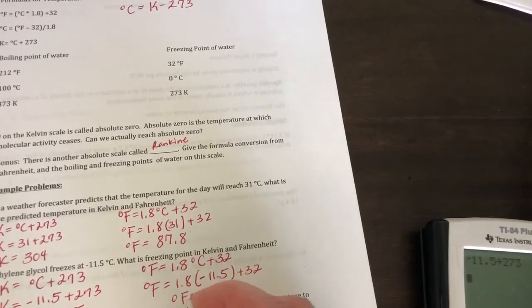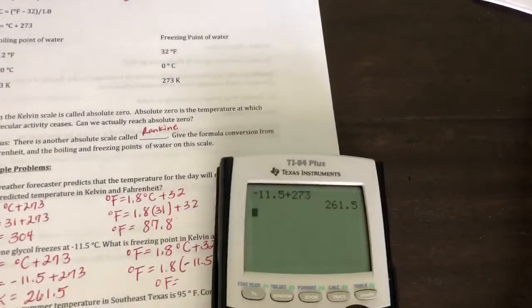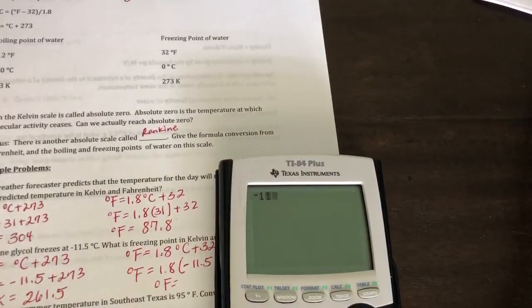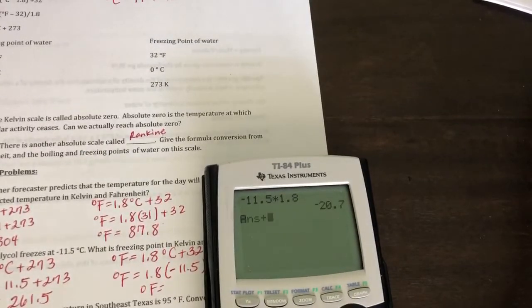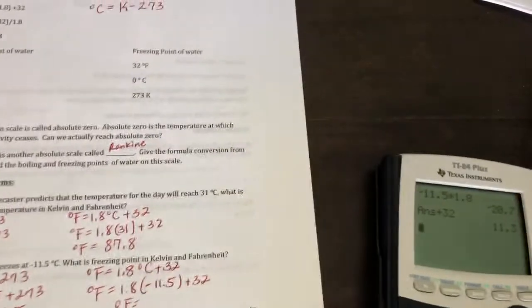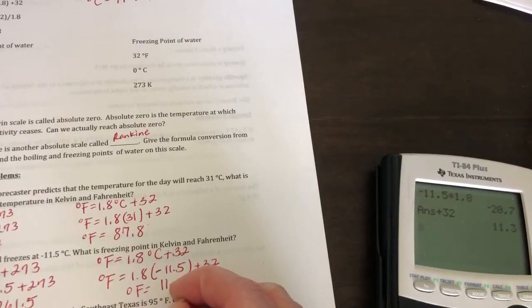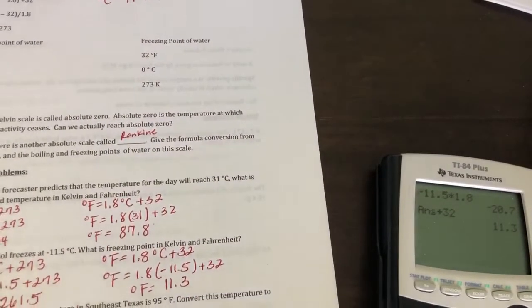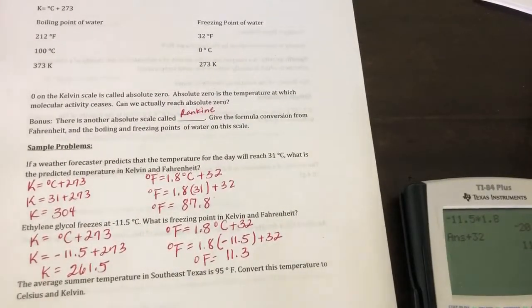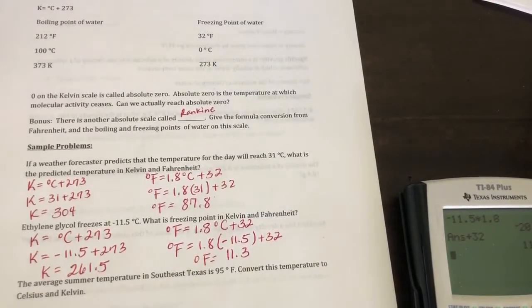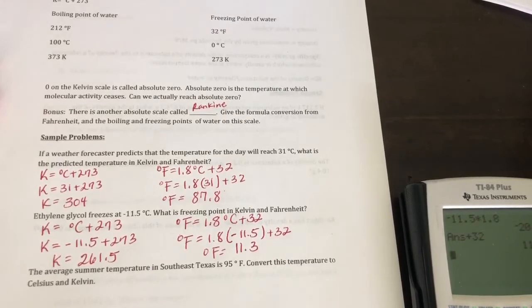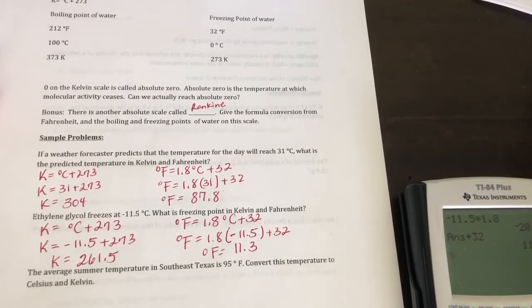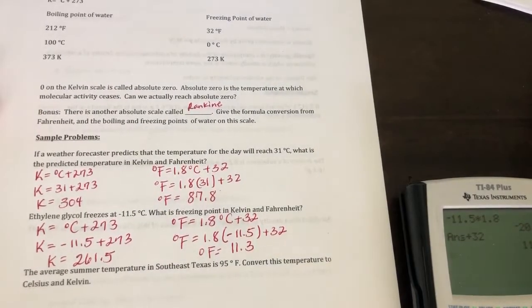Okay, same thing again. We're going to multiply those together first. So instead of the water in your engine freezing at 32 degrees Fahrenheit, it's going to freeze at 11.3 degrees Fahrenheit because the ethylene glycol is mixed in with the water. So it's going to lower the freezing point. That's called a colligative property.